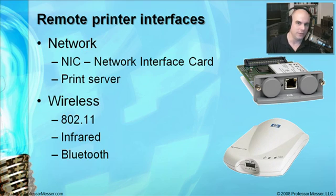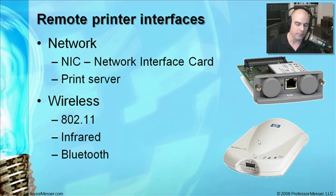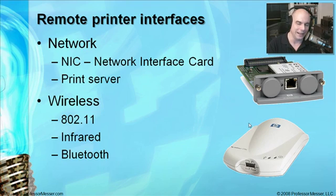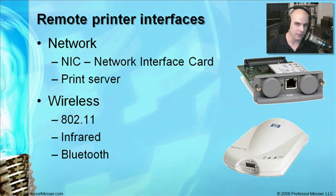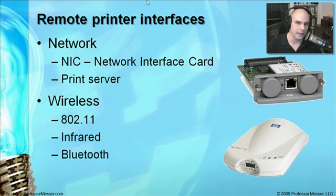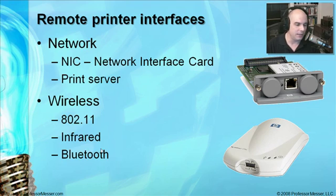Another way, and probably one of the newer ways, is via wireless. You see this a lot on all-in-one devices, and you can buy separate print servers that plug in wirelessly and connect to your computer via USB, usually using 802.11 technologies. There are also wireless printers with infrared connections, which only work at close range, and Bluetooth — those are more personal area connections. You often see 802.11 and wired Ethernet in environments with many computers, while infrared and Bluetooth are used where just one computer needs to connect wirelessly.